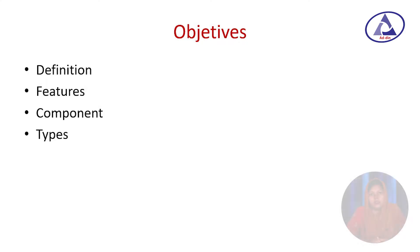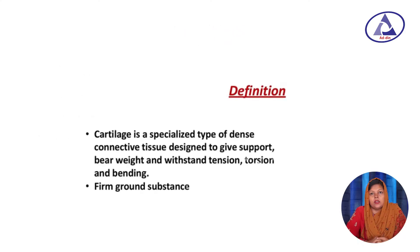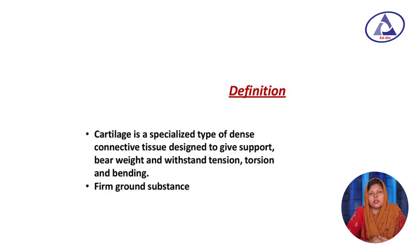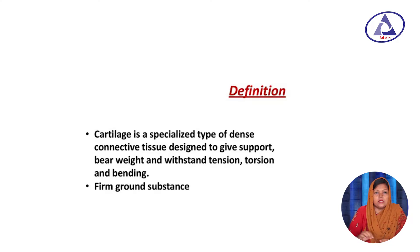First, we have to know what cartilage is. Histologically, it is classified as a specialized connective tissue. Cartilage is a specialized dense connective tissue designed to give support to the human body, and it is also able to bear weight, torsion, and bending. It is important to know that it has a ground substance.